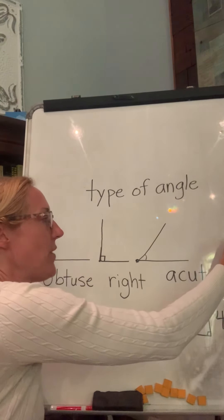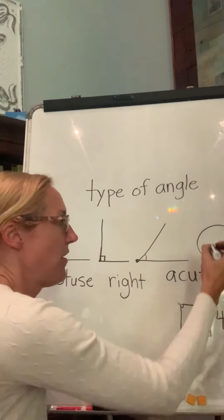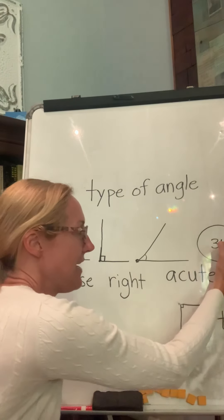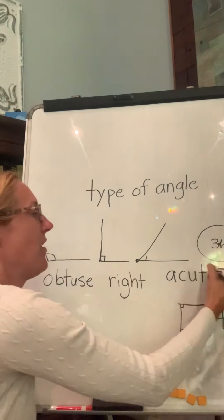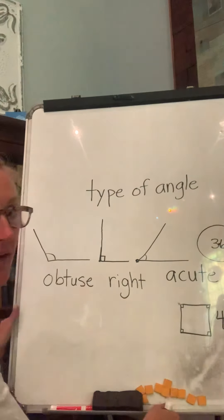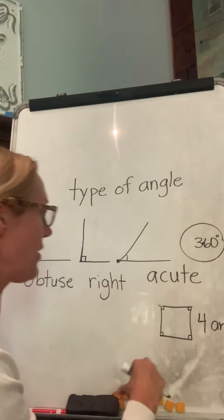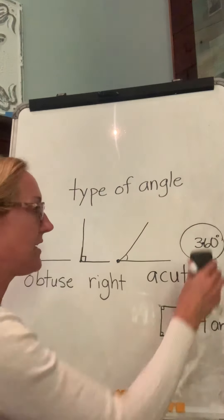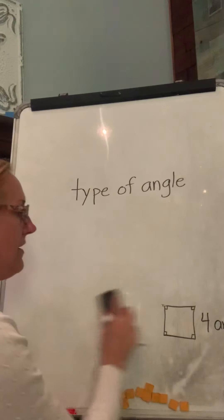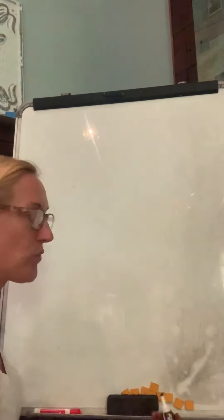If you go all the way around in a whole circle, that's 360 degrees. So all the way around would be 360 degrees. We've got our types of angles, but now let's talk about these degrees.